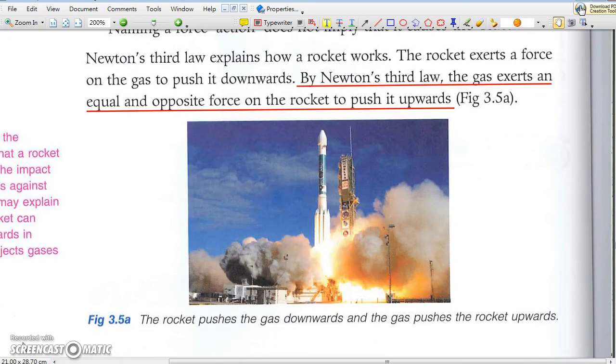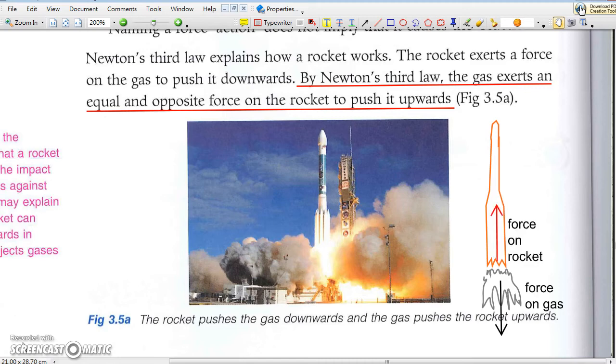So for the launching rocket, the rocket jets out the gas, pushes it downwards. The gas on the other hand exerts a force on the rocket, pushes it upwards. When the upward push is larger than the weight of the rocket, the rocket will accelerate upwards. So F minus W equals MA.